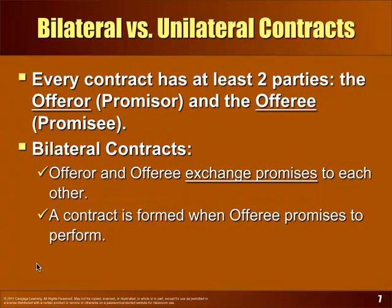A bit more detail about bilateral versus unilateral: bilateral is an exchange of promises, and it's formed from the moment the promises are made. Let's say I get the kid to sign a written contract to mow my lawn all summer — any time I don't pay him or he doesn't mow, that's a breach. Offerees have to know about offers in order to accept them.